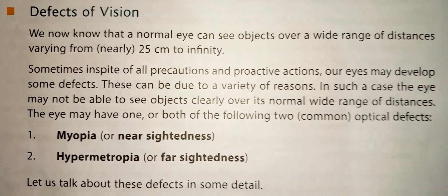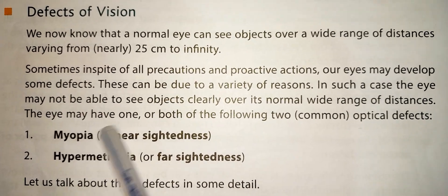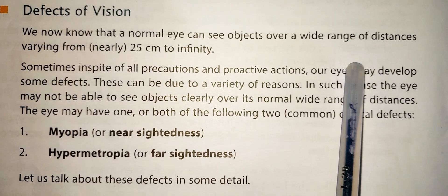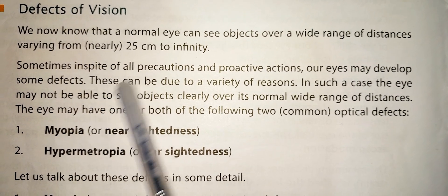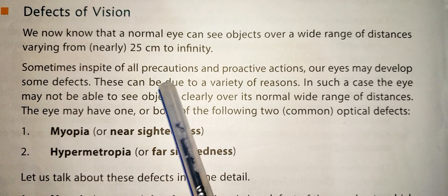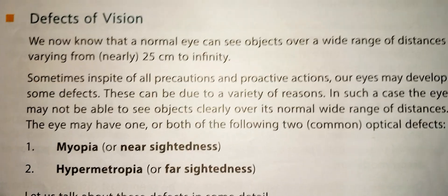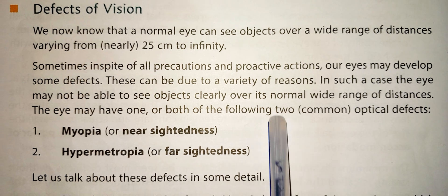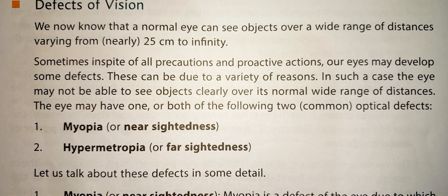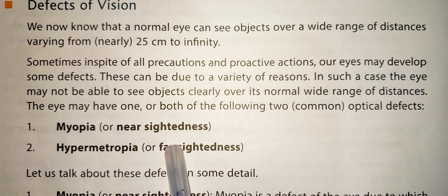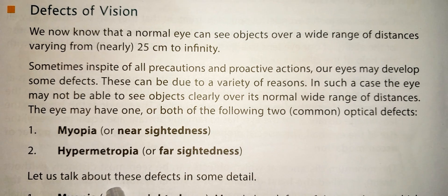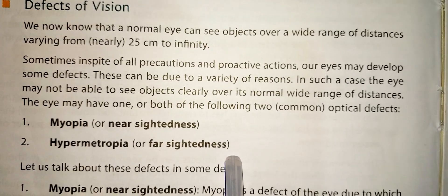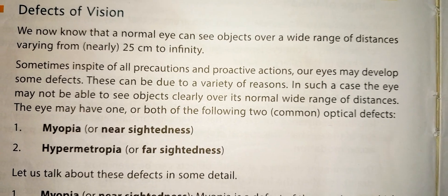Moving on to defects of vision — a normal eye can see objects over a wide range of distances varying from nearly 25 cm to infinity. There are two types of defects commonly found in the human eye: the first one is myopia or near-sightedness, and the second one is hypermetropia or far-sightedness. We will discuss these in my next video.